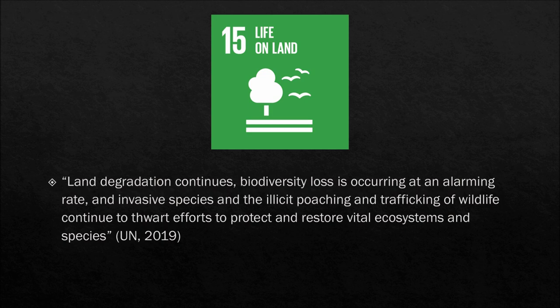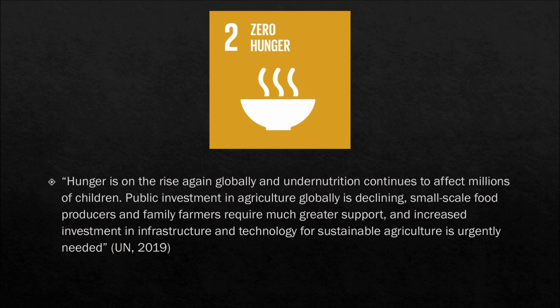Sustainable Development Goal Number 2 is Zero Hunger. Hunger is on the rise again globally, and undernutrition continues to affect millions of children. Public investment in agriculture globally is declining, and small-scale food producers and family farmers require much greater support. Increased investment in infrastructure and technology for sustainable agriculture is urgently needed. Basically, how do you increase the quantity and quality of food to end hunger while not destroying entire ecosystems? There is a need globally for sustainable agriculture.